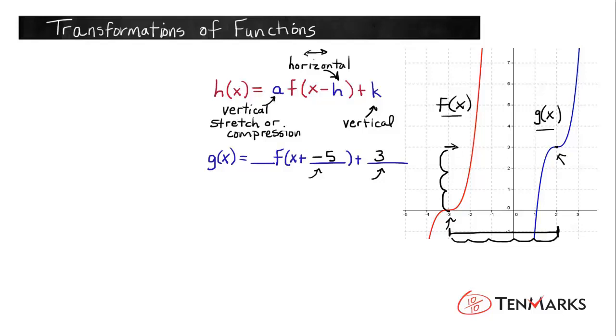So that much of the equation we have: g of x equals some number times f of x plus a negative 5 plus 3. Now let's figure out what the vertical stretch or compression is here. Before we do that, I'm going to clean this graph up a little bit so we can focus just on the curves.